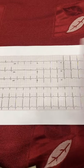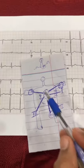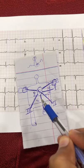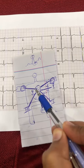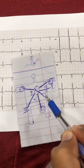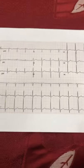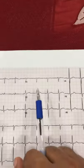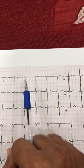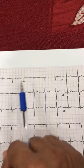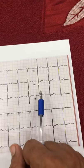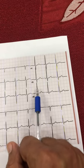Normal R wave progression happens because as we rotate around the heart from V1 to V6, each lead views the action potential from a different angle. The action potential seen by V1 is completely opposite to that seen by V6. In V1 the predominant deflection is downward, while in V6 the predominant deflection is upward — exactly opposite.